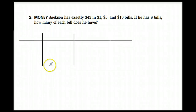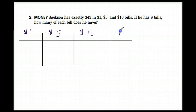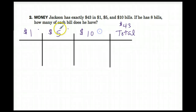This time our chart has four columns. In the first column we're going to put the amount of $1 bills. In the second column, the amount of $5 bills. Third column, the amount of $10 bills. And the fourth column is our total, which we want to be $43. We also want to make sure this column plus this column plus this column equals 8 bills total.